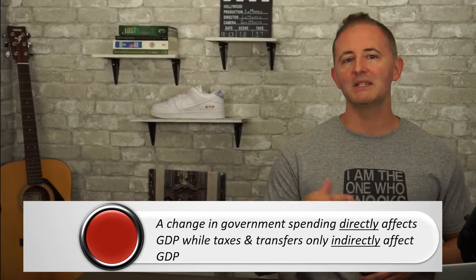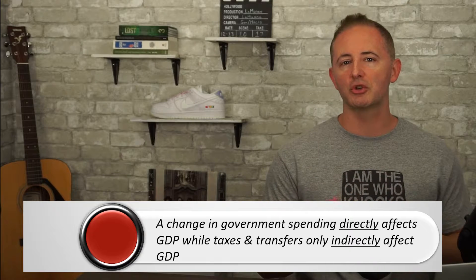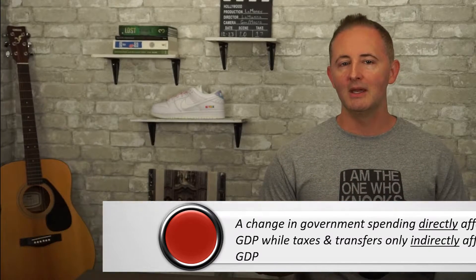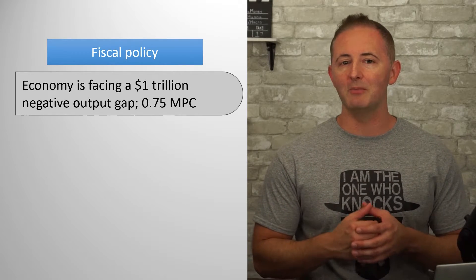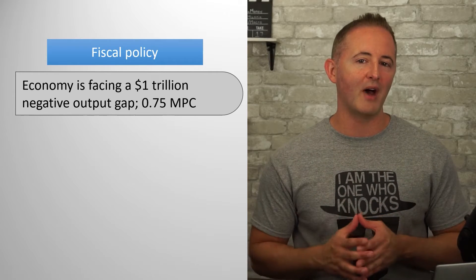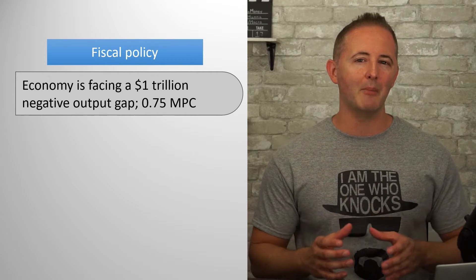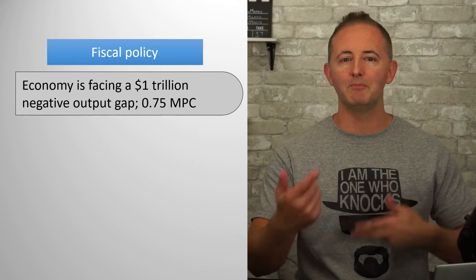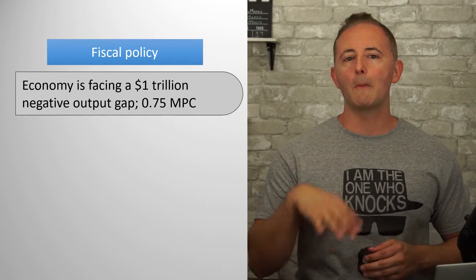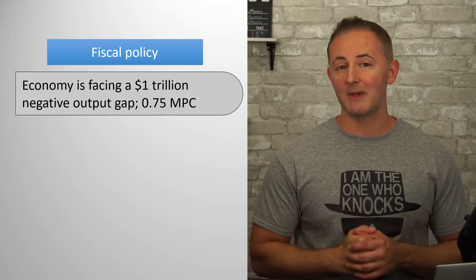As an example, suppose the U.S. is currently facing a $1 trillion negative output gap. Additionally, assume that the current MPC in the U.S. is 0.75. If policymakers want to close that output gap and bring the economy back to full employment level of output, what would be the proper amount for the government to spend? And what if it wanted to achieve that goal through tax cuts or by increasing transfers?